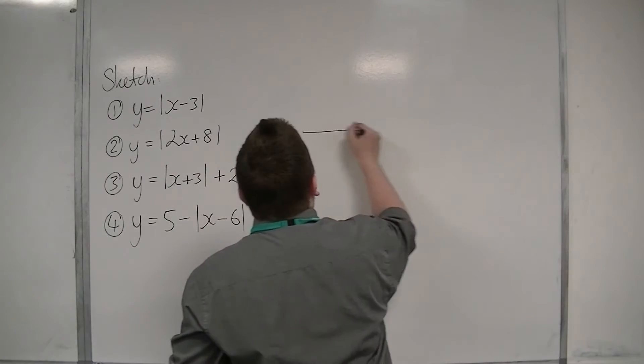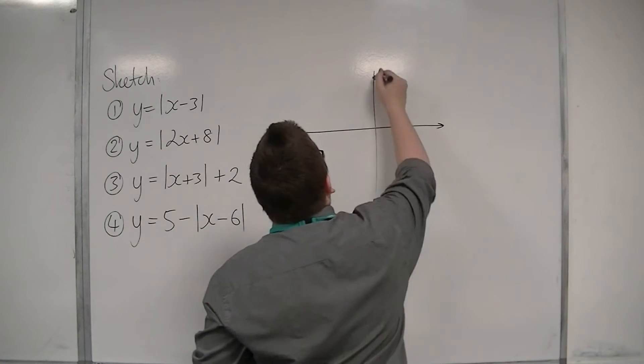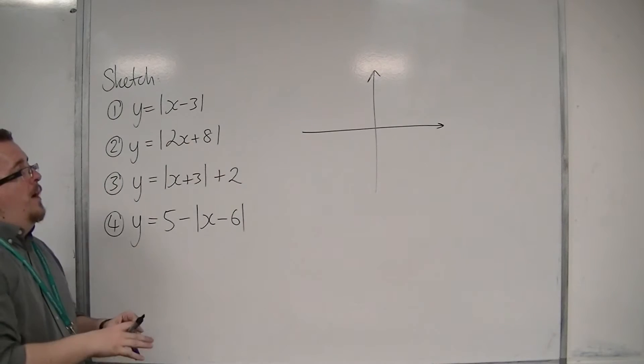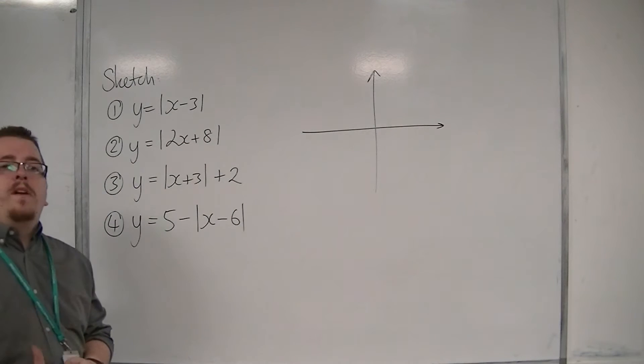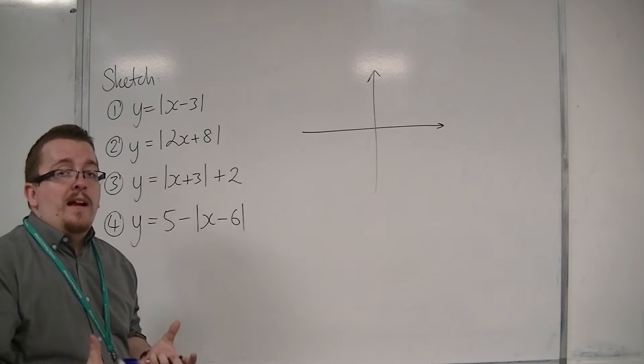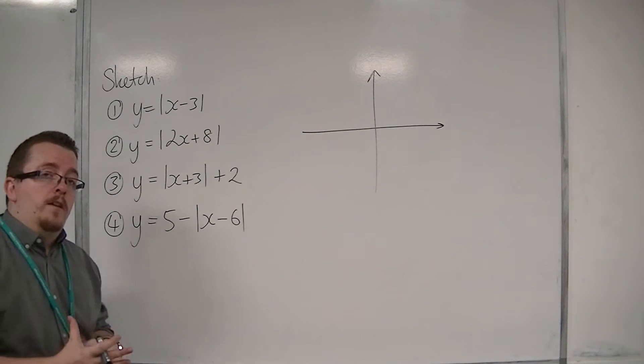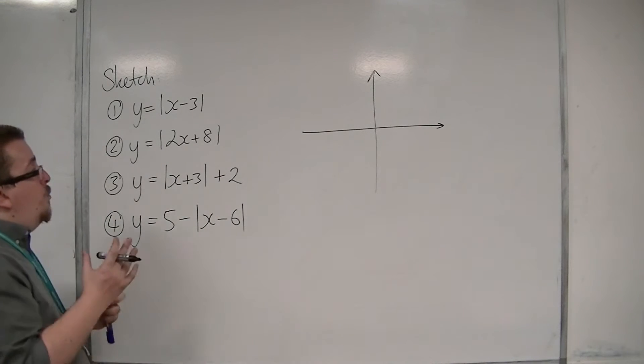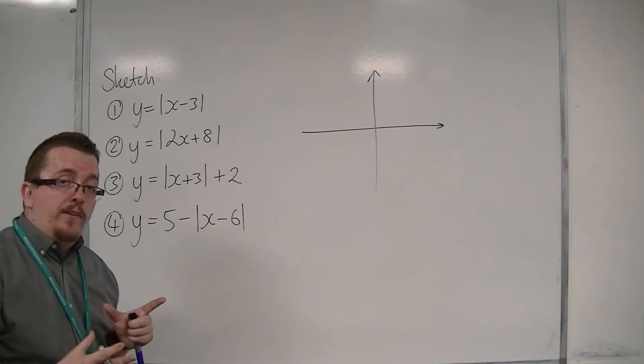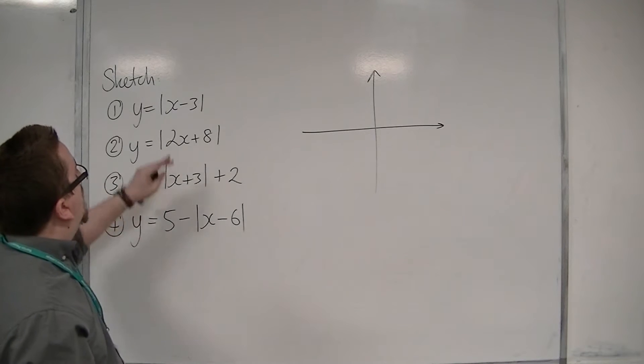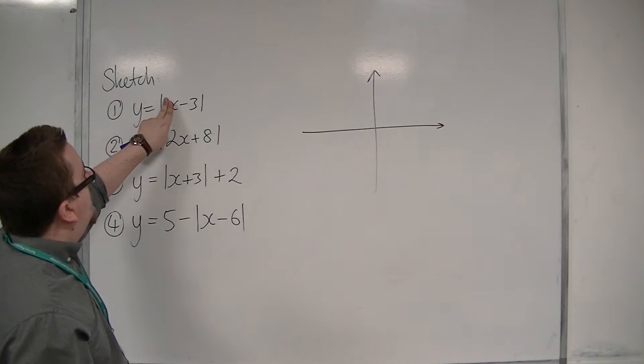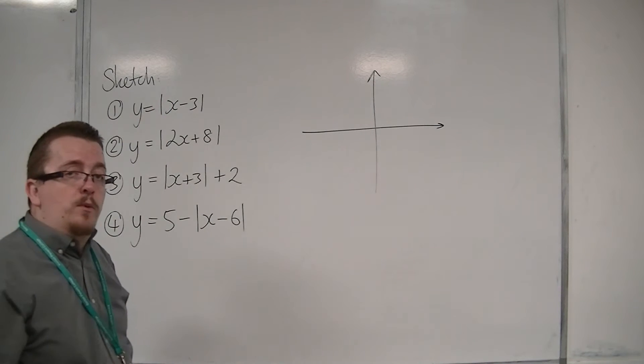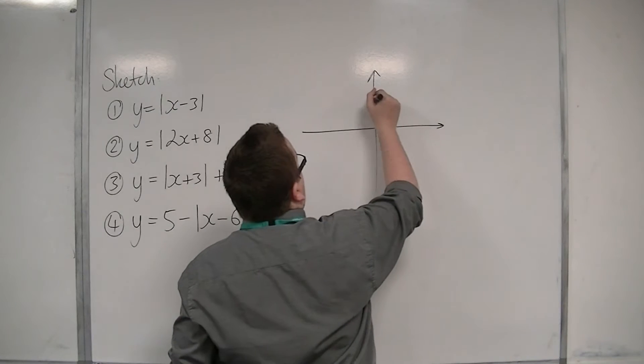So in this case, what we need to think about is that all of those rules about putting x is zero and y is zero still work. If we want to work out where this crosses the y-axis, that's when x is zero. So when x is zero, I get modulus of minus three, which is just three. So it goes through three.